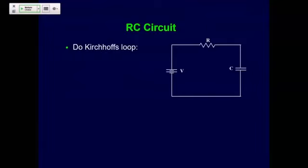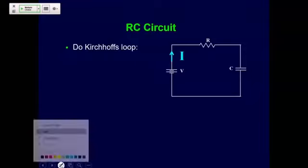Here's a circuit that would be charging up a capacitor. Here's my resistor, here's my capacitor, and here's my battery. This is the circuit we described — I think it was in Lecture 13 — about how to charge up a capacitor. That's really all we're doing now; we're just trying to be a little more mathematical about it.